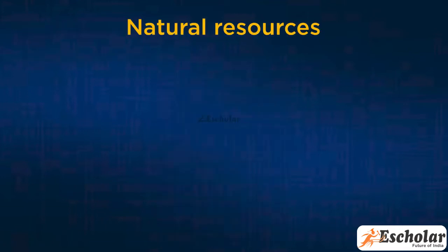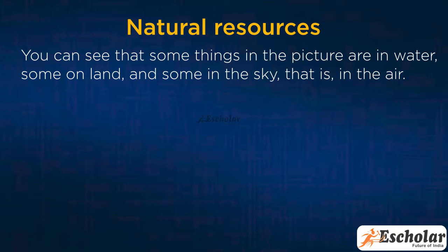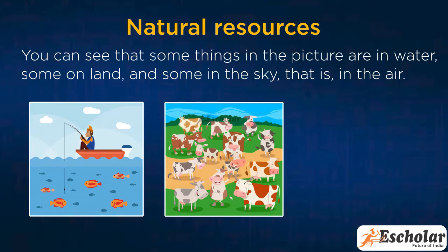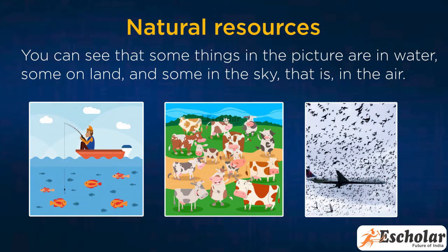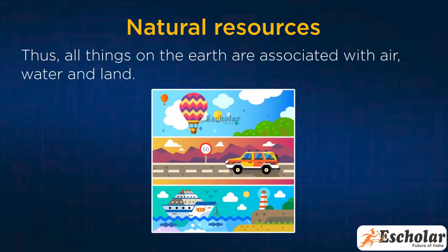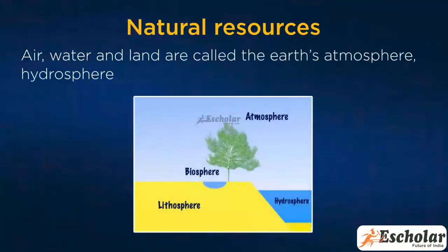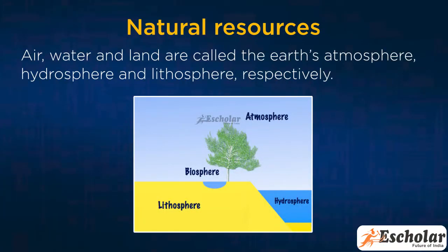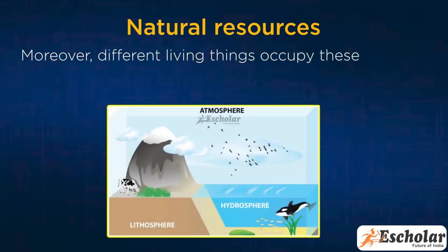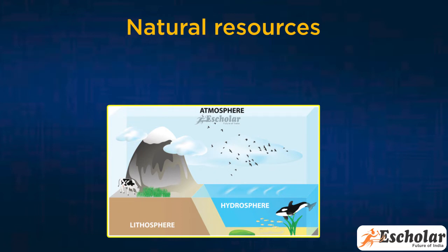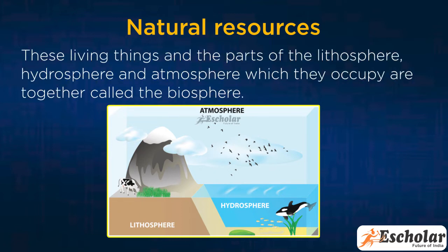Natural Resources. You can see that some things in the picture are in water, some on land, and some in the sky, that is in the air. Thus, all things on the earth are associated with air, water, and land. Air, water, and land are called the earth's atmosphere, hydrosphere, and lithosphere, respectively. Moreover, different living things occupy these three spheres of the earth. These living things and the parts of the lithosphere, hydrosphere, and atmosphere which they occupy are together called the biosphere.